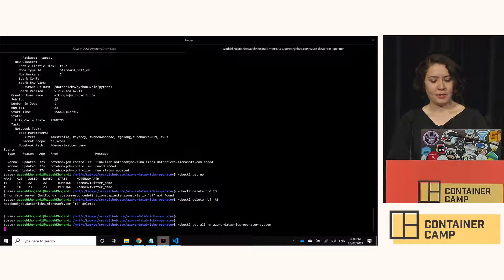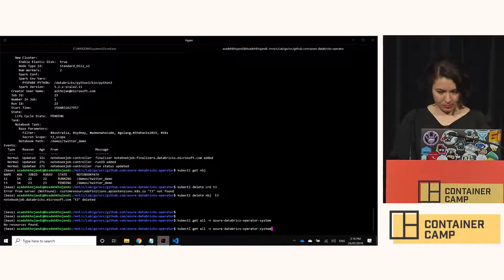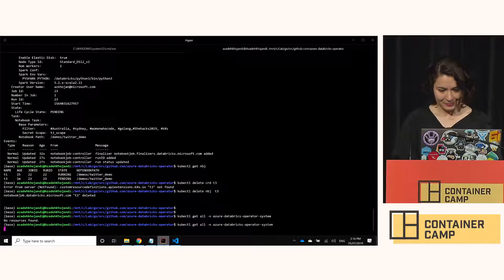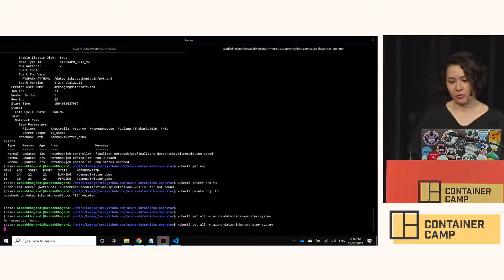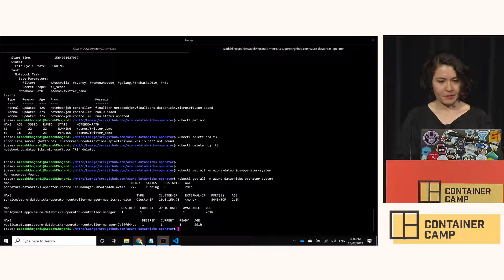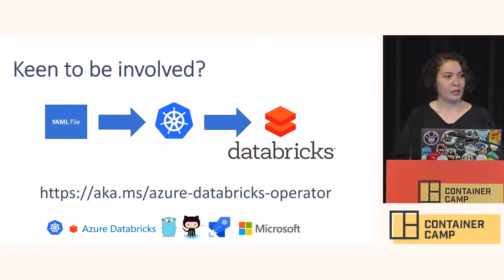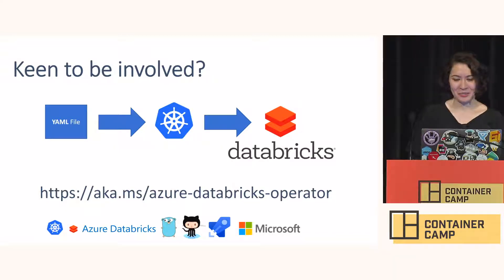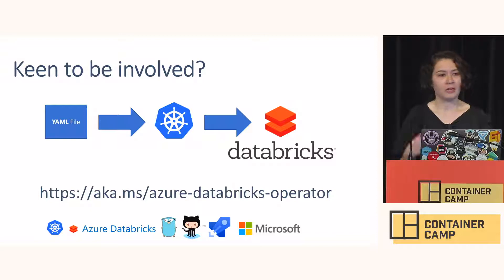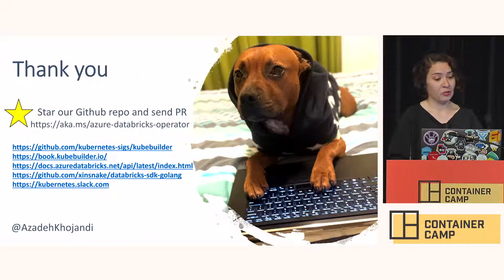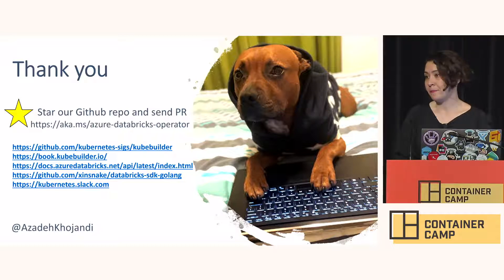If you say kubectl get all and provide the namespace, you should see all the resources under that namespace. It's a fairly new project and we like to get everyone involved. It was born in Australia, and we want to make sure we can build operators that everyone can use and benefit from. It has all the cool technologies behind it — we use Azure DevOps for our pipelines and release management. If you're interested in operators, these are the resources, and we'd love to have your pull requests and have you involved in building operators.